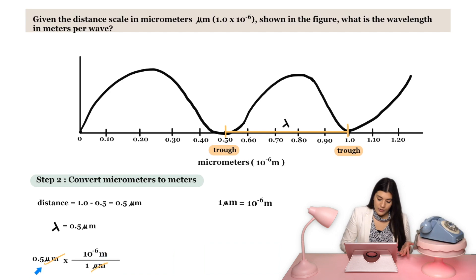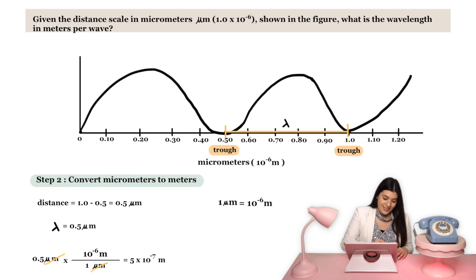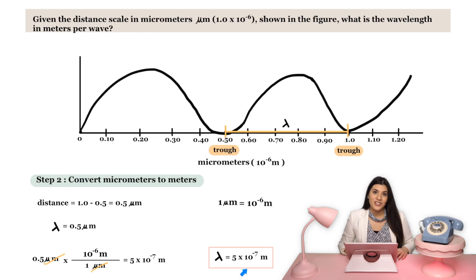So we're going to multiply 0.5 times 10 to the negative 6. And that will give us 5 times 10 to the negative 7 meters. That is our overall wavelength for this question.